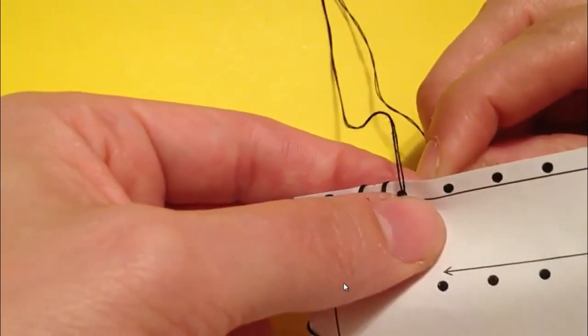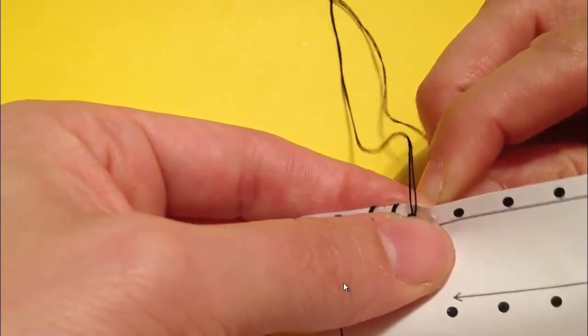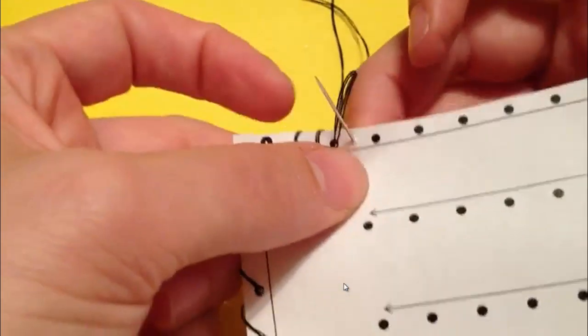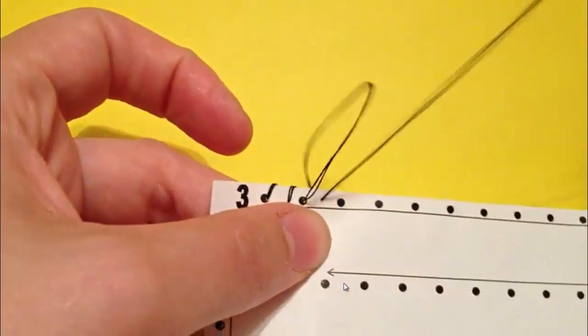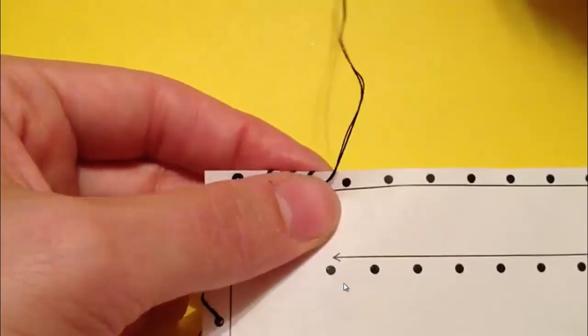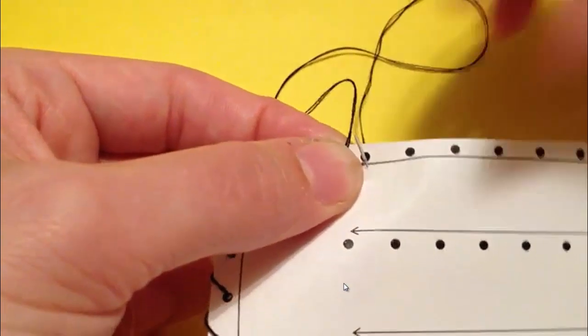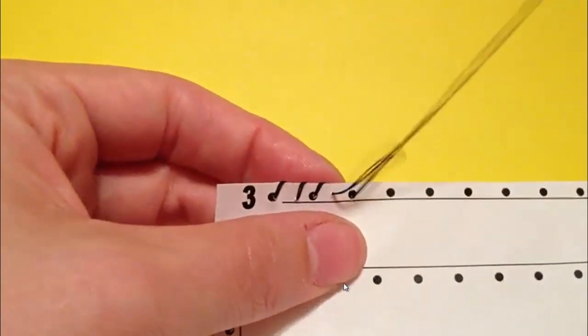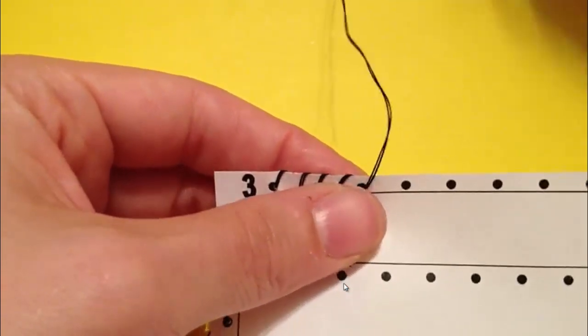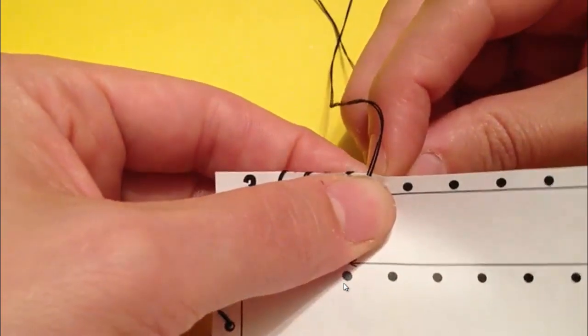We're going to try that again. You're going to figure out where about the middle would be. Poke through there. I'm going to pull through, and then go to the dot. So you're adding a stitch in between each dot. This will get you a little bit better at spacing out stitches without having the paper to help you.